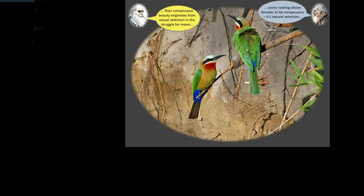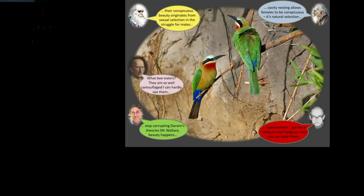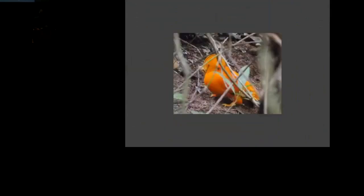If Alfred Russel Wallace was there, he'd say, complete nonsense, it's because they nest in holes in the riverbank and the females can be conspicuous. Richard Prum would say, stop corrupting his theories, beauty happens. Con Benson would say, get me a shotgun and a frying pan and I'll show you it's aposematism. And Abbott Thayer would say, bee-eaters, I can't even see them.